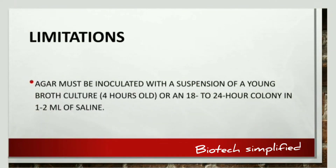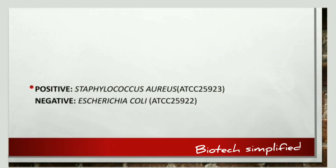The limitation of the DNase test is that the agar should be inoculated with a suspension from a young growth culture that is only 4 hours old, or the inoculation must be done from an 18 to 24 hour colony suspended in 1 to 2 mL of saline. An example of a positive result is Staphylococcus aureus, and an example of a negative result is Escherichia coli.